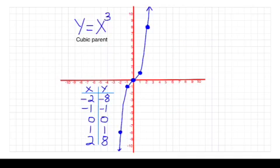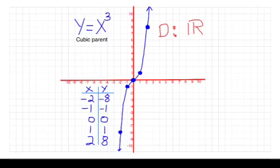For y = x³, the cubic parent function, is there any x we can't use? No — negative numbers, positive numbers, all can be cubed. So the domain is all real numbers. And the range also gives us all real numbers, since cubing can produce any positive or negative output.